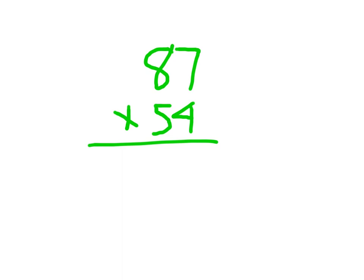Starting with 87 times 4. 4 times 7 is 28 — place the 8, regroup the 2. Then 4 times 8 which is 32, plus 2 which is 34. Cross out the 2 regroup.